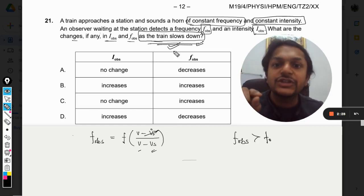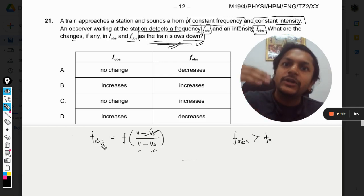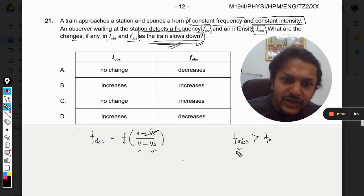Now one thing is sure that f_obs is more than the original frequency, but the train is now slowing down. So this velocity is slowing down, it means the denominator v minus v_s is now increasing its value because velocity of sound is constant but velocity of train is reducing.